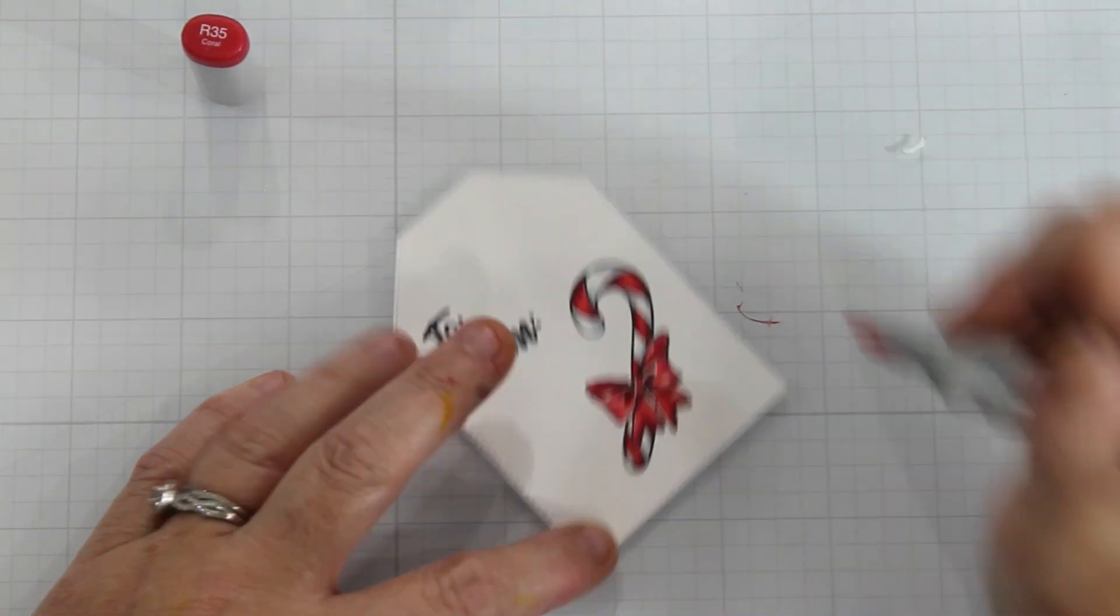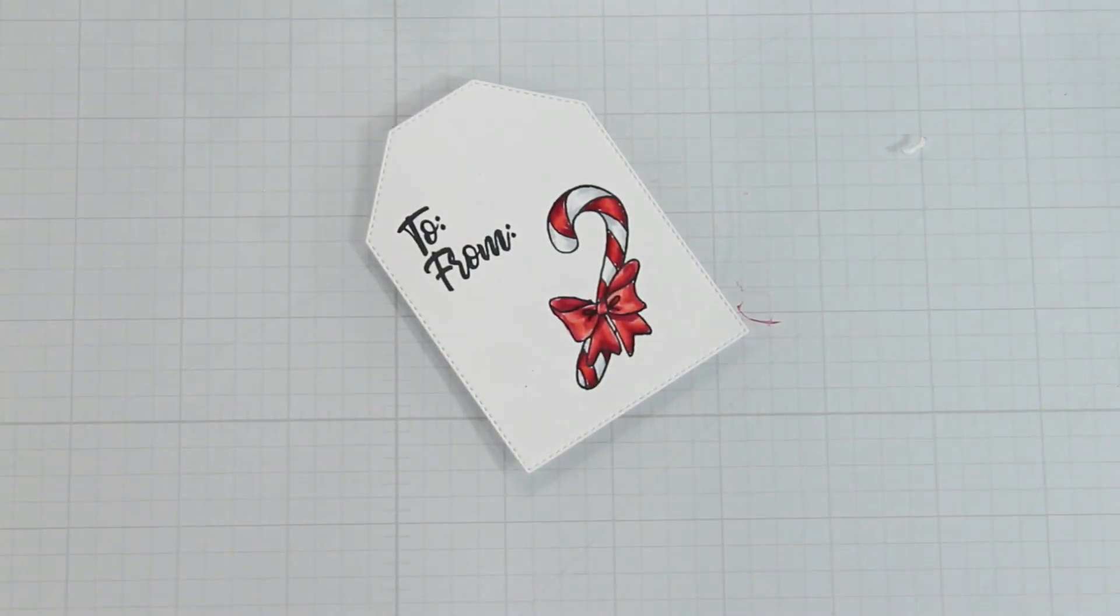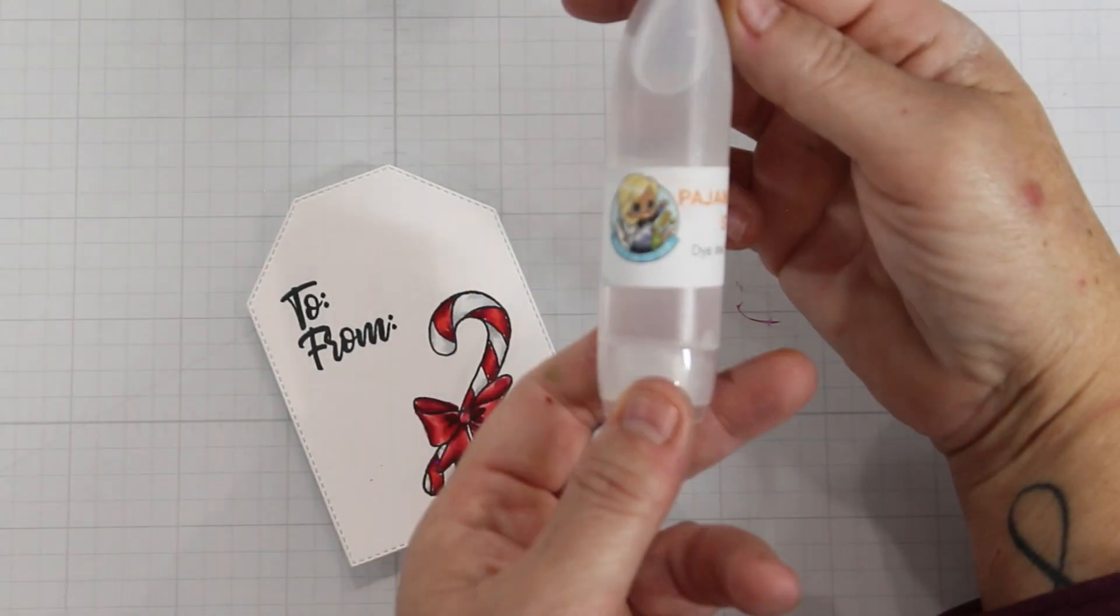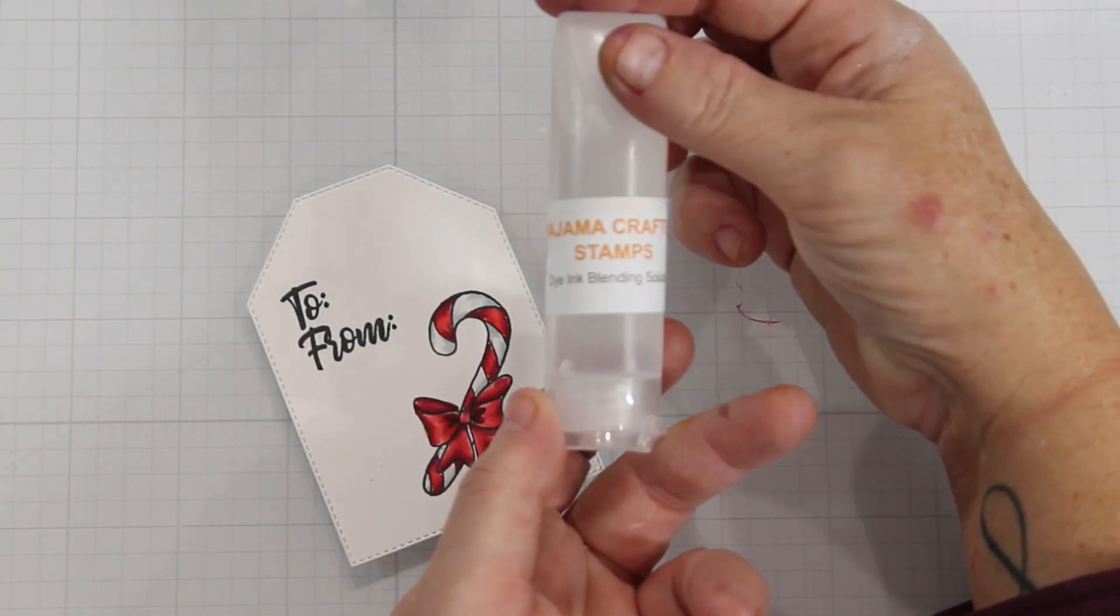From there I bring in the R32 again just to blend it in. I do feel like I lost a little bit of my shadow so I brought in an R39.